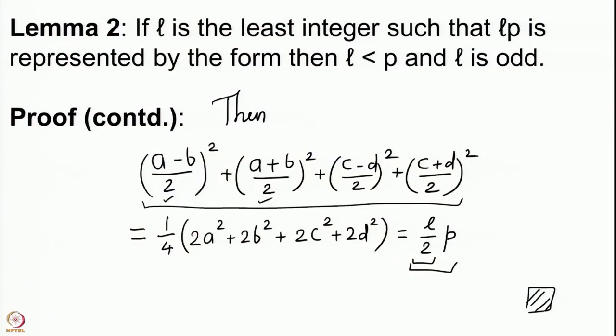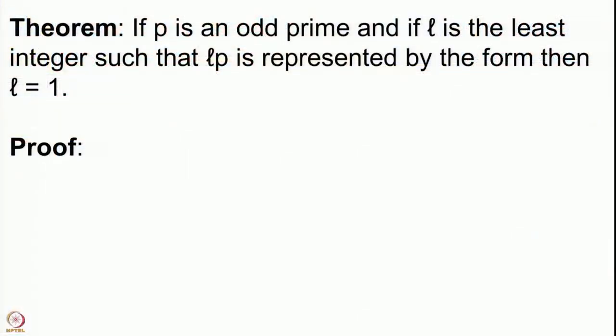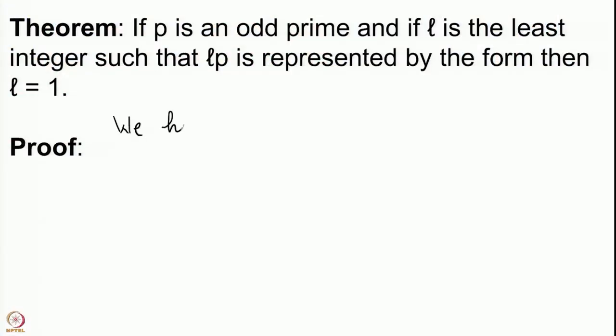With these two lemmas, let us prove Lagrange's theorem. We prove that if p is an odd prime and L is the least positive integer such that Lp is represented by the form, then L=1. We already know L < p and L is odd. We start by assuming L > 1 and deriving a contradiction.